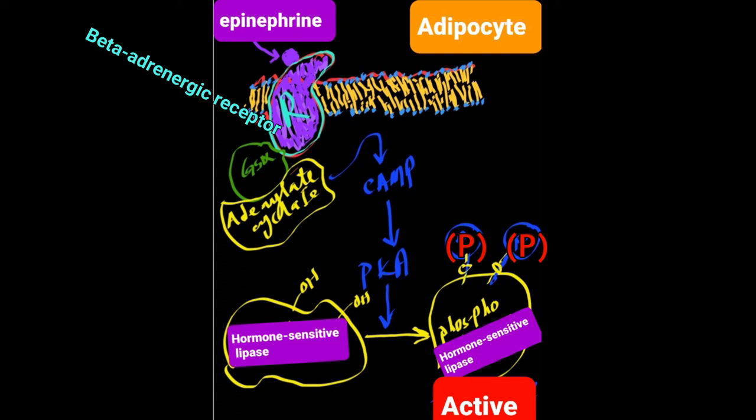It is also noteworthy that TAGs stored in adipose tissue represent a significant amount of fuel reserves for various tissues during fasting. The lipolysis of these TAGs and availability of circulating fatty acids is essential for maintenance of the energy needs of several peripheral tissues during the fasting state.